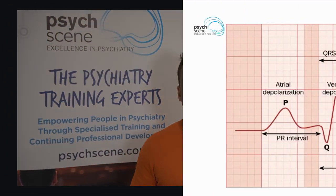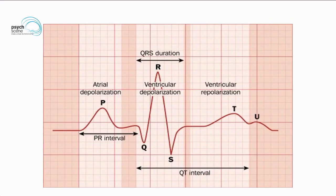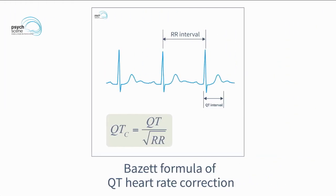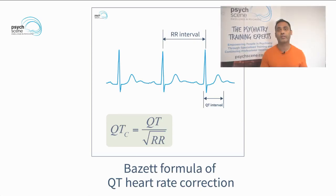The QT interval on the ECG is defined as the distance from the start of the QRS complex to the end of the T wave. This is generally calculated by the formula known as the Bazett formula. Most ECG machines calculate the Bazett formula for you. However, the Bazett formula is calculated as the QT divided by the square root of the RR interval.